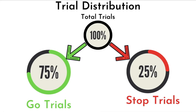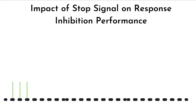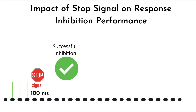Let us now move on to understanding how the SSD impacts one's inhibition performance. The presentation of variable delay stop signals casts an impact on response inhibition performance and is accounted for in experiments using the stop signal task, as also in theoretical frameworks and computational models of response inhibition. Imagine you are presented with a Go cue, and after about a 100ms delay the stop signal appears. It is much more likely that with this shorter SSD you will successfully inhibit, because the stop signal was presented much closer to the Go cue and you were not yet ready to initiate a response.